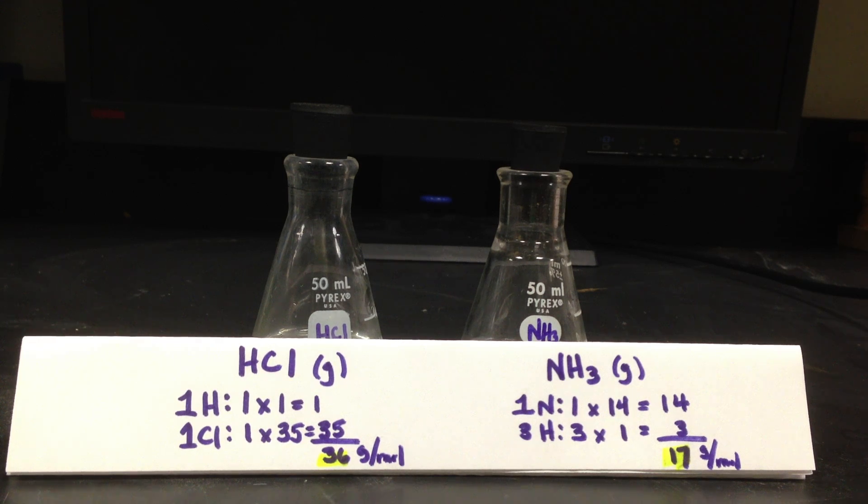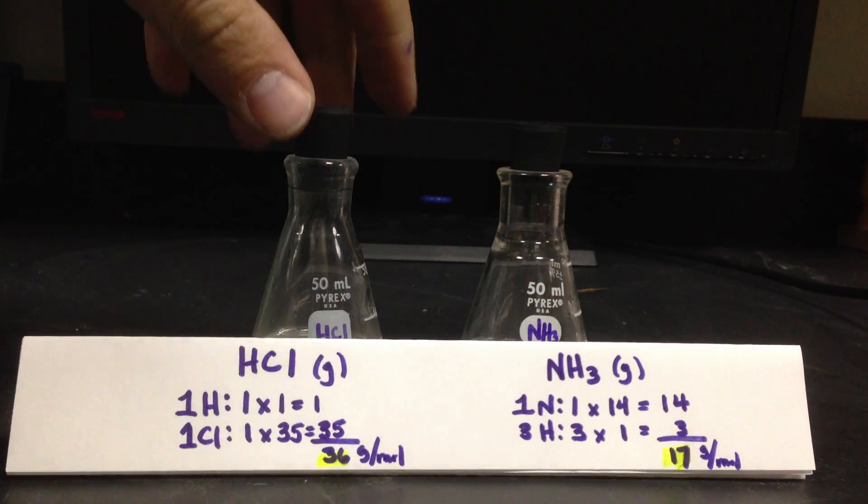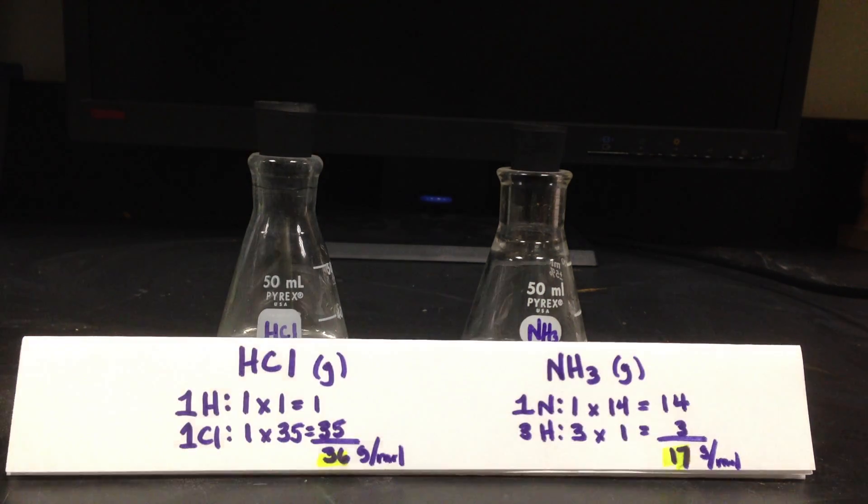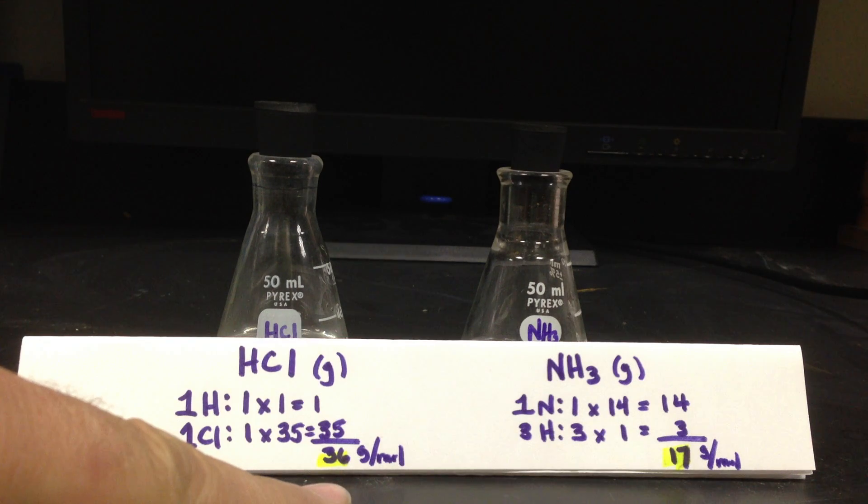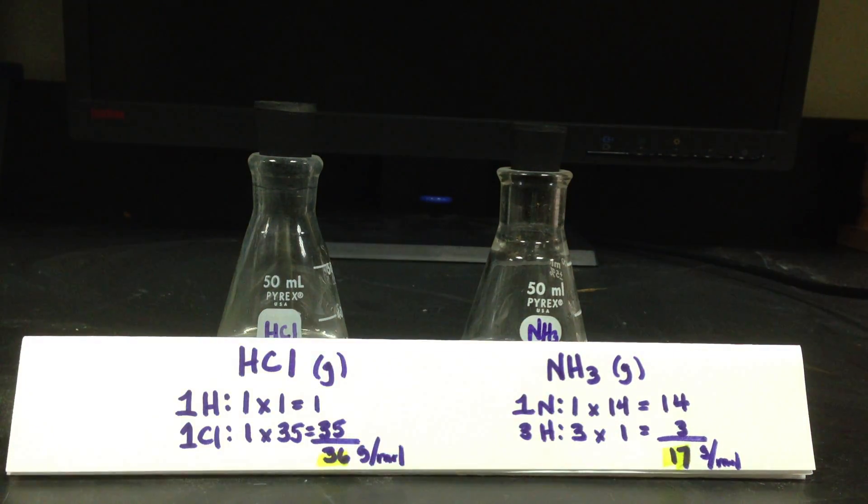I have hydrochloric acid and ammonia. Really I have ammonia hydroxide, but it'll leave the flask as ammonia. These two gases have different molecular masses: approximately 36 grams per mole for the hydrochloric acid and 17 grams per mole for the ammonia.